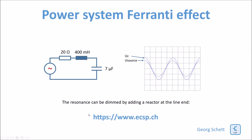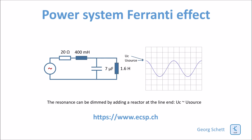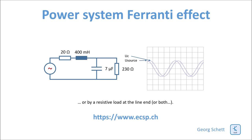This voltage increase can be mitigated by adding a reactor at the line end. Here there is a reactor and you can see that the voltage at the end of the line is comparable or even equal to the source voltage. The voltage increase is also mitigated if you have a heavy load at the end of the line — in this case a 230 ohm resistance. The output voltage is no longer higher than the source voltage, and you can also observe a phase shift between the source and the line end voltage.